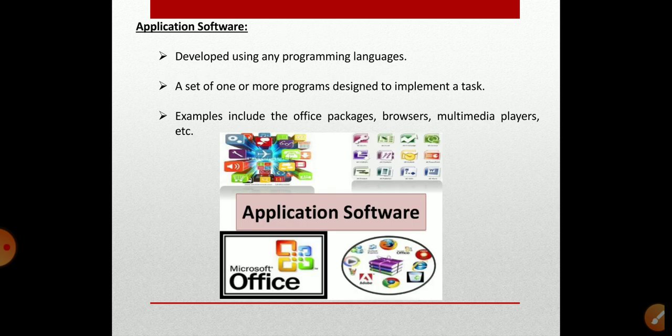Application software is meant for the end user, while system software is meant for the computer system itself — to manage all other activities of the computer. Application software, or simply 'app,' is computing software designed to carry out a specific task other than the operation of the computer itself, to be used by the end user. Examples include word processors, spreadsheet programs, web browsers, media players, and photo editors. These are all examples of application software used by the end user directly to perform tasks on a computer.